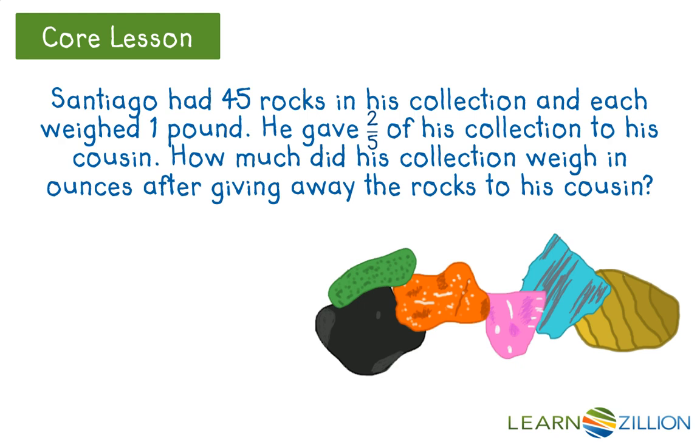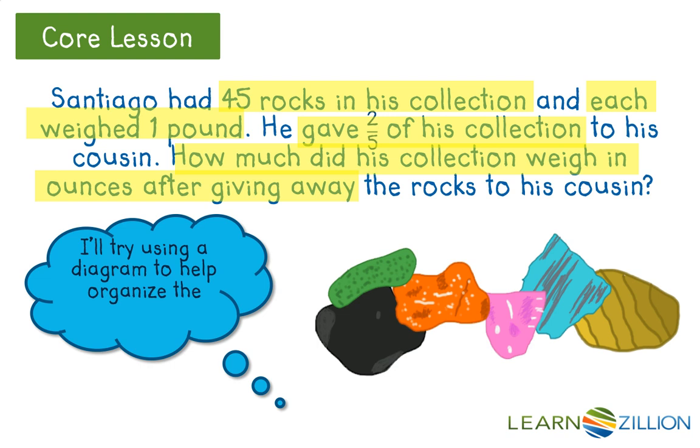Let's look at the important information here. We know he has a total of 45 rocks and that each rock weighs 1 pound. We also know he gave away 2 fifths of the collection to his cousin. And so the question wants to know how much did his collection weigh after he gave away these rocks, and they want their answer in ounces. This is a lot of information, so I think I'm going to use a diagram drawing to help me think through the problem, and then maybe I'll be able to better figure out what I need to do to solve.